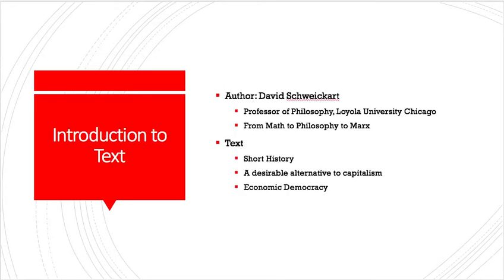The text is authored by David Schweikart, who is a professor of philosophy at Loyola University in Chicago. It's important to note that David had a PhD in math and then transferred to philosophy and did a PhD there as well. He was pretty drawn to Marx and Marx's political economy, and his math background gave him a nice foundation from which to understand Marx. The book itself does not have a lot of mathematics in it, but it does give David an opportunity to explain certain concepts from Marx with easier-to-understand language.